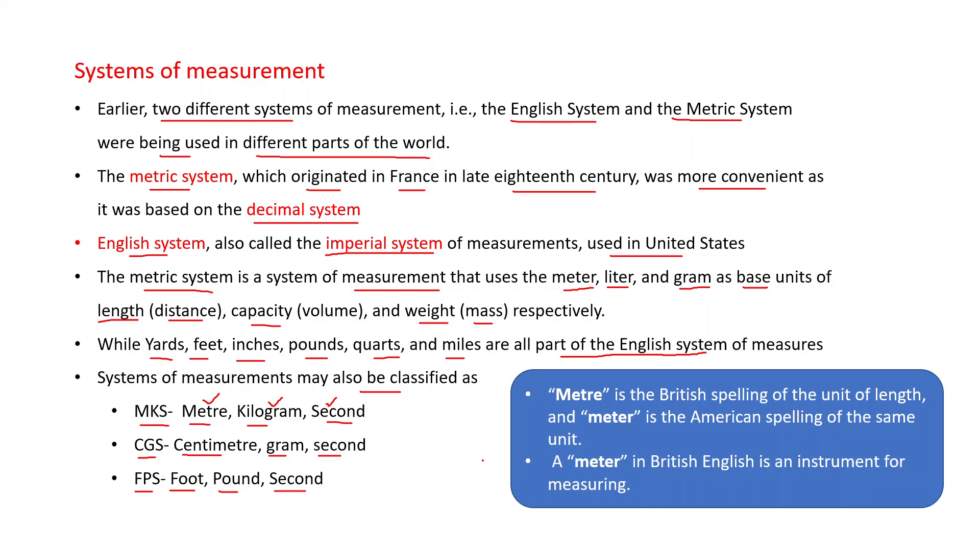There is one confusion in the spelling of meter. Meter can be written as M-E-T-R-E, or this may be written as M-E-T-E-R. M-E-T-R-E is the British spelling of the unit of length, and M-E-T-E-R is the American spelling of the same unit. We are following in India British English. That is why, when we write the unit of length, we will write it M-E-T-R-E.